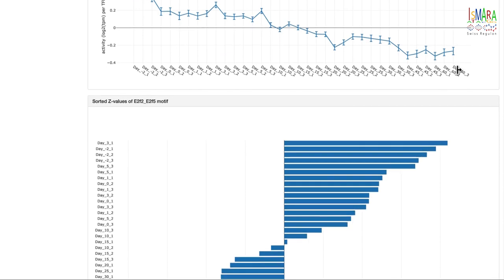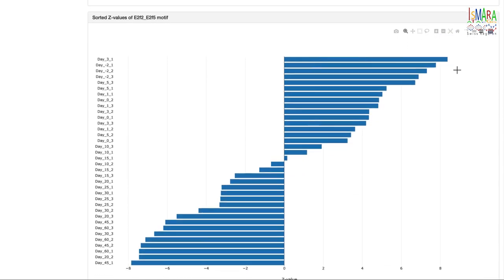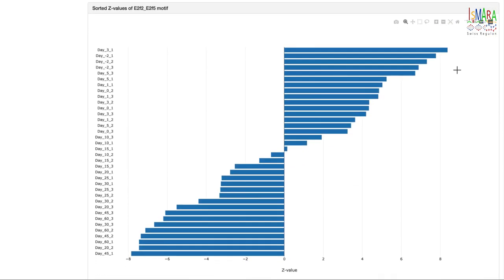Apart from showing the motif activity sorted in the order that samples are given by the user, ISMARA also provides a table where the samples are sorted from the most significantly up-regulated at the top to the most significantly down-regulated at the bottom.